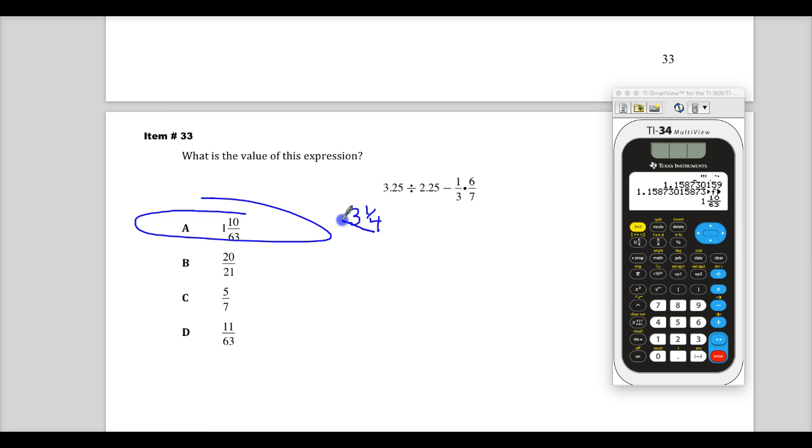I'll go ahead and convert that into an improper fraction. 4 times 3 is 12, plus 1 gives me 13 over 4. Divided by 2.25 would be 2 and 1-fourth, which would be 9-fourths. Minus 1-third times 6 over 7.